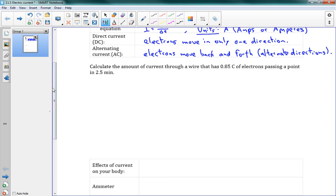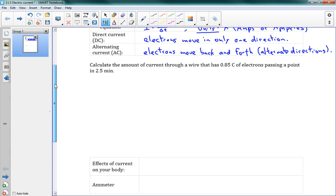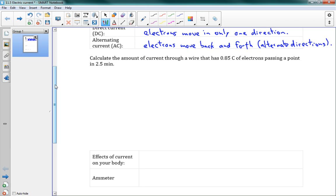So we're going to do a problem here. Calculate the amount of current through a wire that has 0.85 coulombs of electrons passing a point in 2.5 minutes. So we have our equation here, I equals Q over delta T. Our charge here is 0.85 coulombs. That's how many electrons we have. And our time is 2.5 minutes.